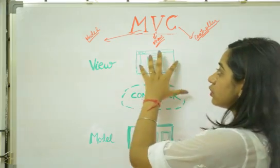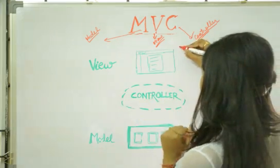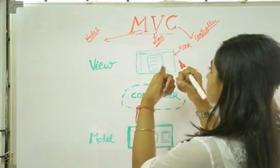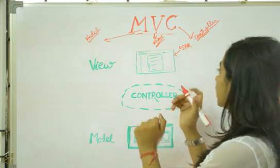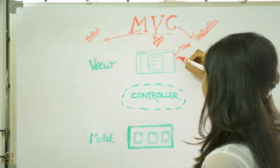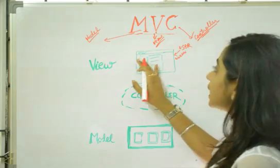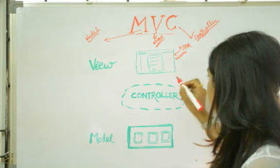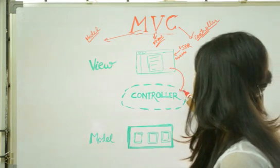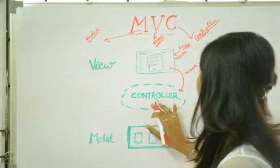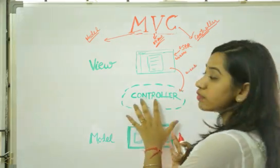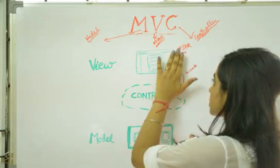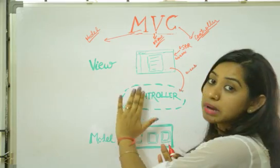As you can see in the diagram, we have a view and we have a user. Once the user interacts with the view, the user puts some inputs into the view via events. Every time a user interacts with the view, an event is raised. Once the event is raised, the view sends the event to the controller. The controller is the place where we have all the logic. The view sends the user inputs or the event to the controller to which it is mapped.